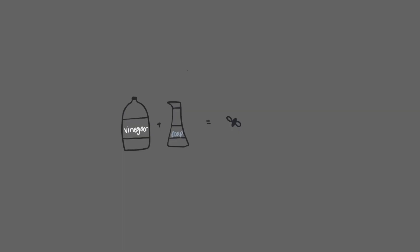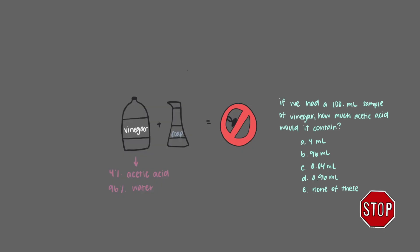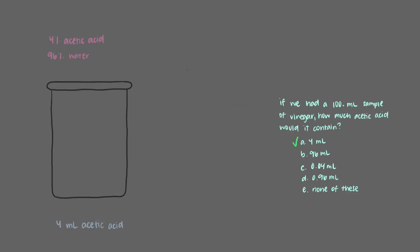Let's look at another example. Vinegar mixed with a few drops of soap is a common way to defend your kitchen against fruit flies. Vinegar is generally 4% acetic acid and 96% water by volume, but how many moles of acetic acid and water is this? First, we have to figure out the volumes of each component. If we had a 100 milliliter sample of vinegar, there would be 4 milliliters of acetic acid, and the rest — 96 milliliters — are water. We'll put this information under the beaker.